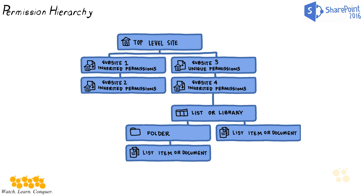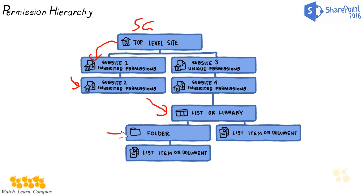By default we have what's called permission inheritance. Starting at the top left we have our site collection permissions, which are inherited by sub site one, which is also inherited by sub site two. If a list or library was part of sub site two, it would inherit those permissions. The folder would inherit those permissions, and the list items or documents would then inherit those permissions as well. By default, our site collection determines what permission levels are available at all levels.